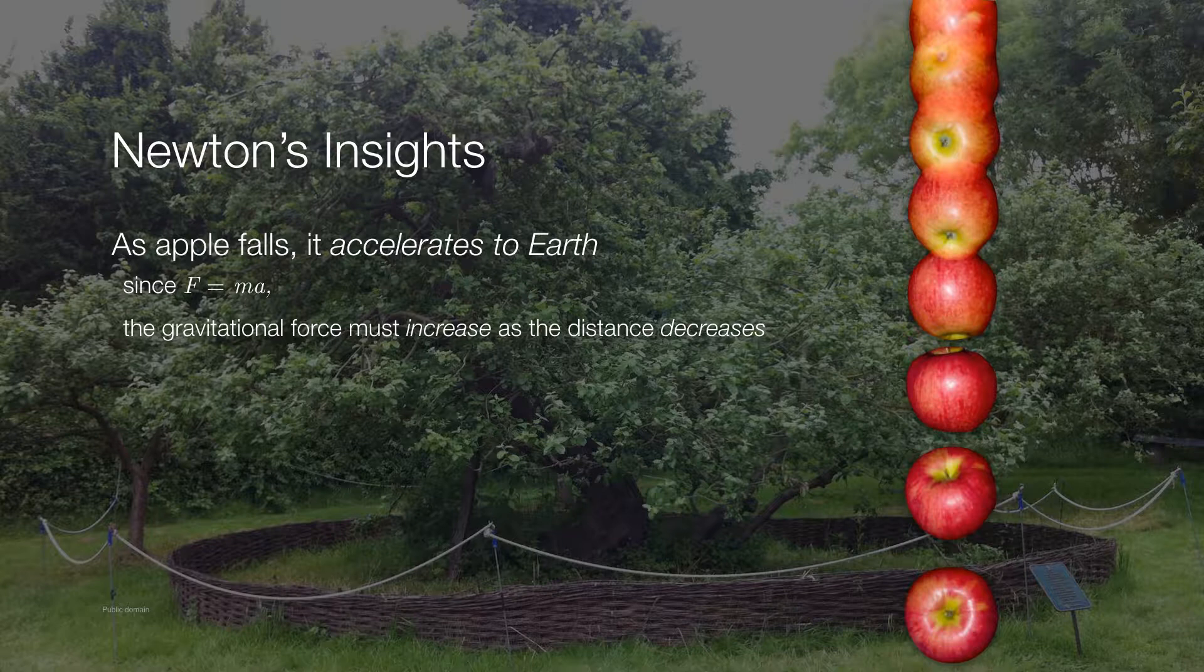Newton was able to use this, plus his mathematical skills, to deduce that as the apple is falling closer and closer to the center of the earth, the apple is going to accelerate. But this also means that as the distance between the apple and the earth decreased, the gravitational force drawing the apple to the earth must increase as well.